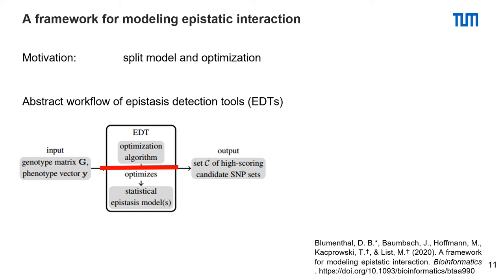As an input, the tool gets a genotype and phenotype matrix. Then the tool uses an optimization algorithm to optimize for a given statistical model. As an output, you get a candidate SNP set, which is usually used for evaluation.